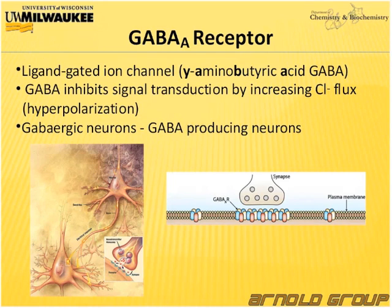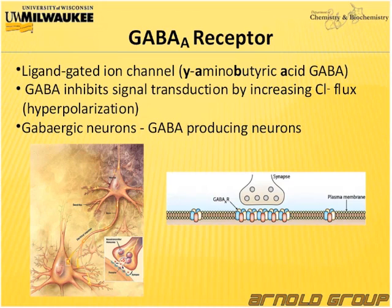The GABA-A receptor is a ligand-gated ion channel, and the small molecule gamma-aminobutyric acid actually inhibits the signal transduction by increasing the chloride flux into the cell, which is also called hyperpolarization. This phenomenon is seen in GABAergic neurons, and the majority of neurons are GABAergic. That means they can actually produce the neurotransmitter, which inhibits the communication between two neuron cells.